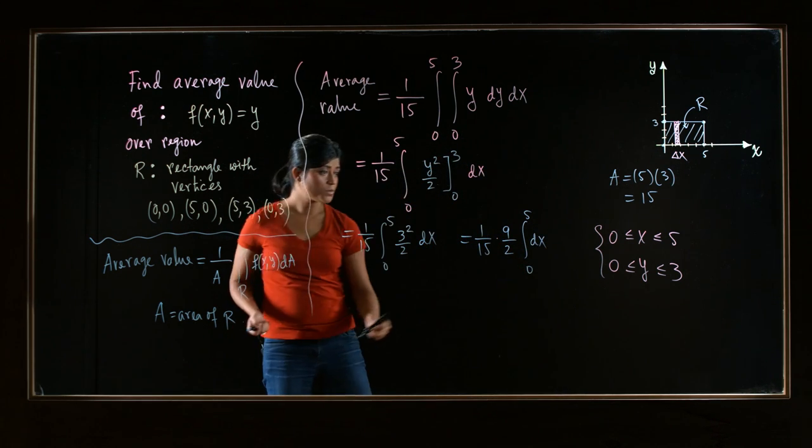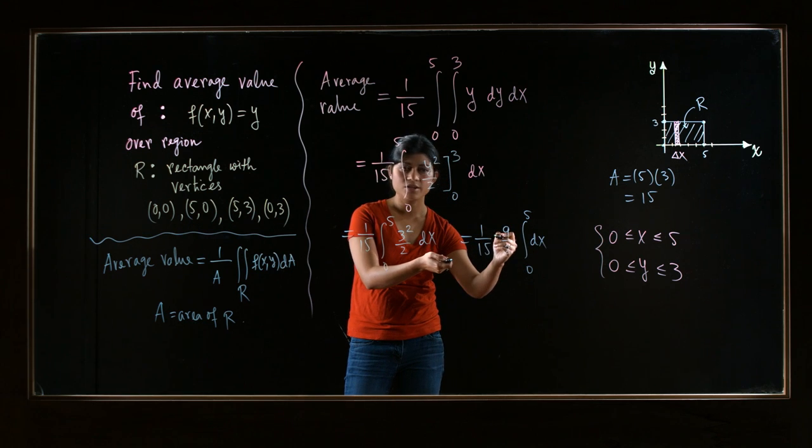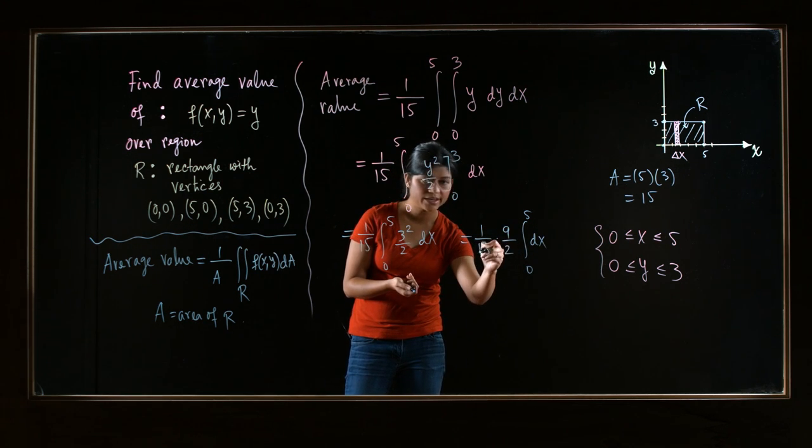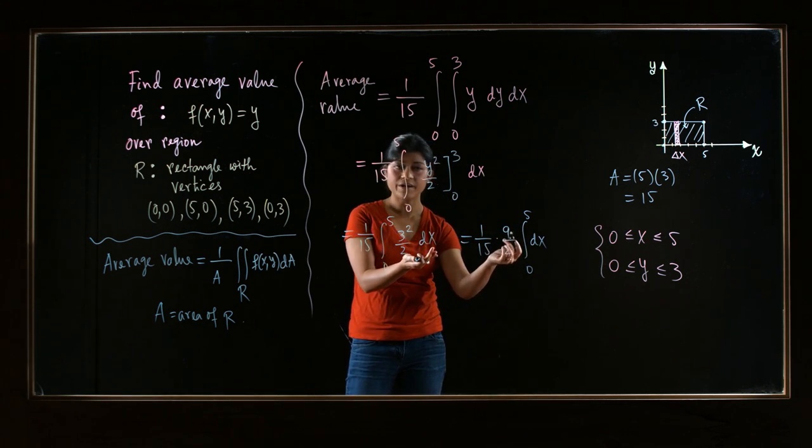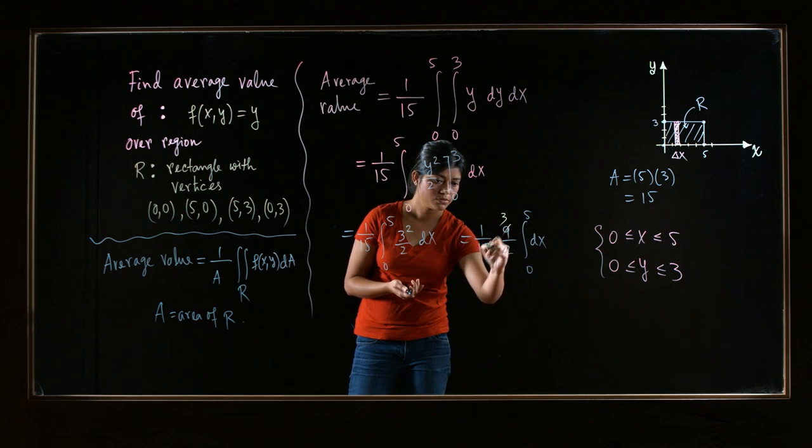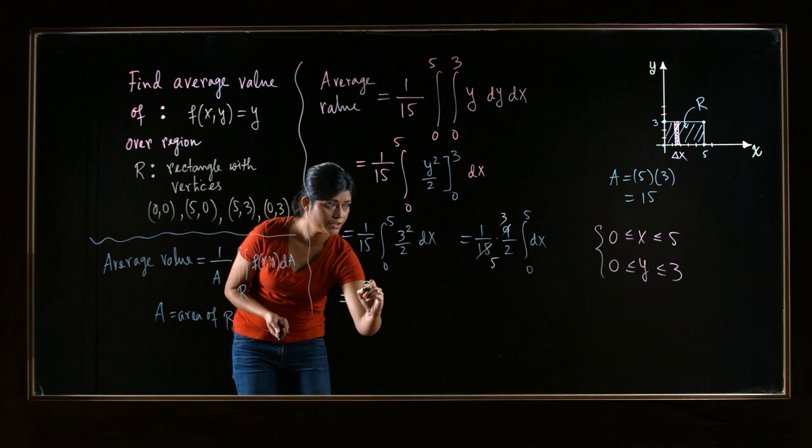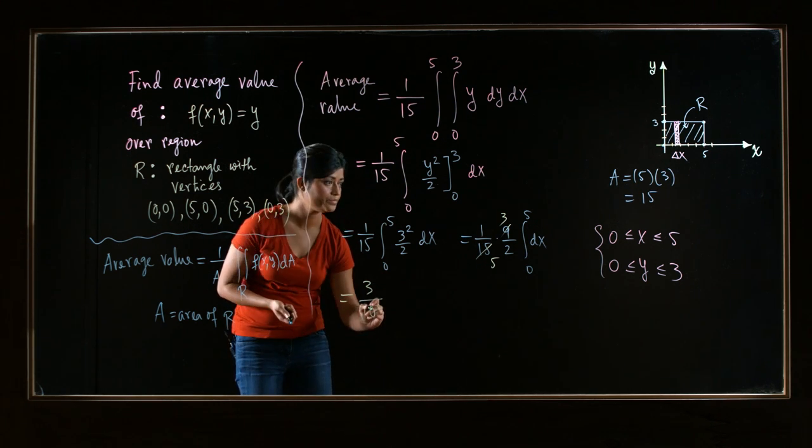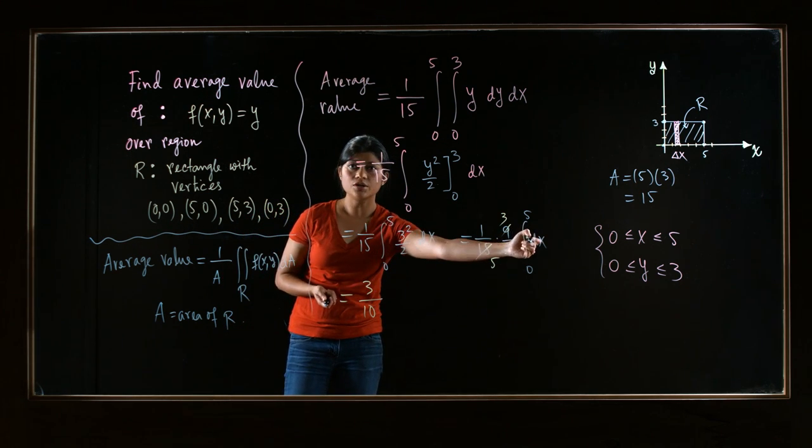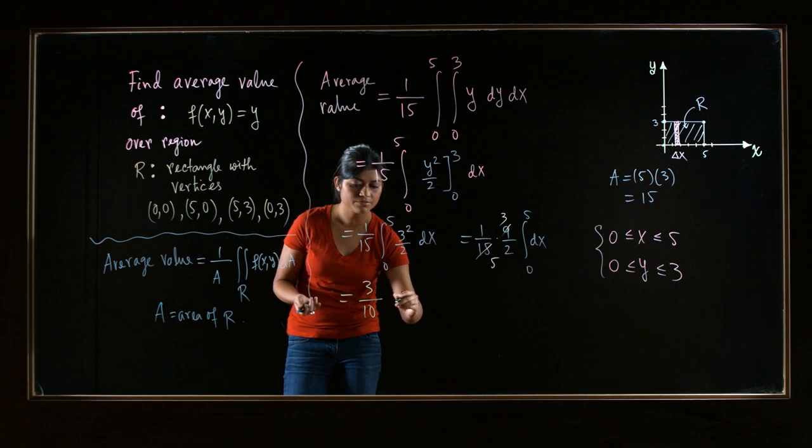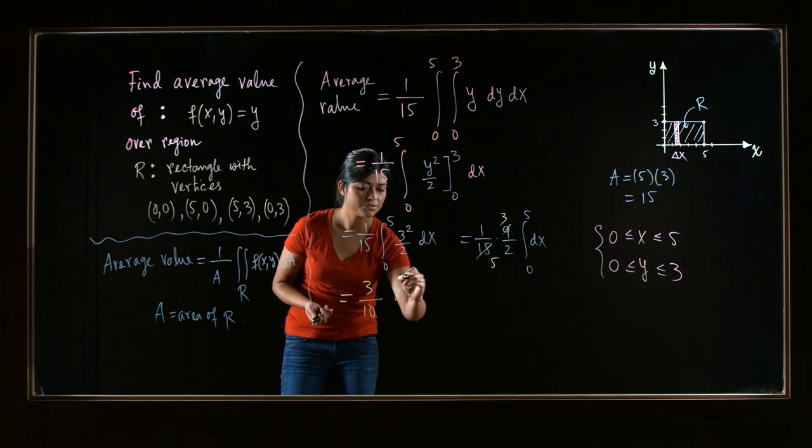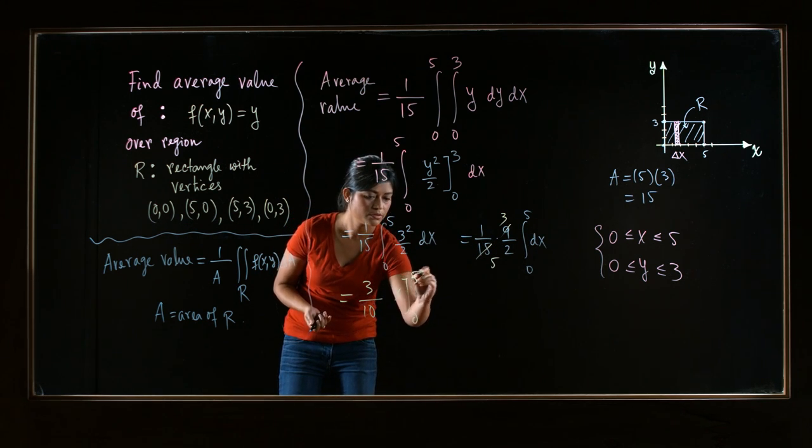If you want, at this point you can simplify this constant a little bit. Look, there's a 9 and a 15, and there's a common factor of 3 that you can cancel. So you will have 3 over 10. And now the integral of dx, the antiderivative is just x. And then you have to plug in 0 and 5.